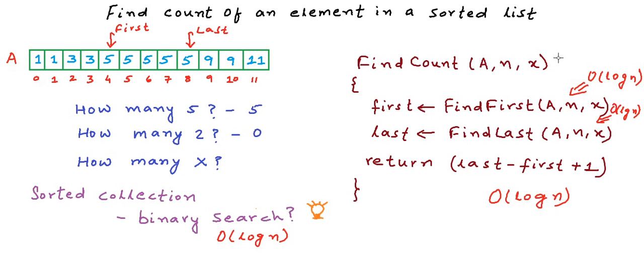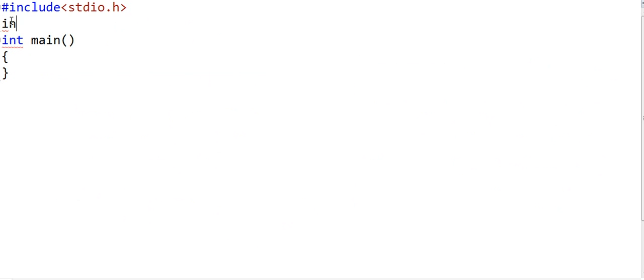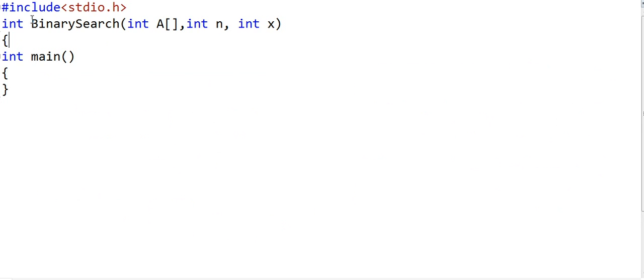That's really great. We described how to find the first or last occurrence of an element in a sorted array using binary search in a previous lesson, with a link in the description. Now let's write real C code. We'll first write a simple normal binary search and then modify it to find the first or the last occurrence.